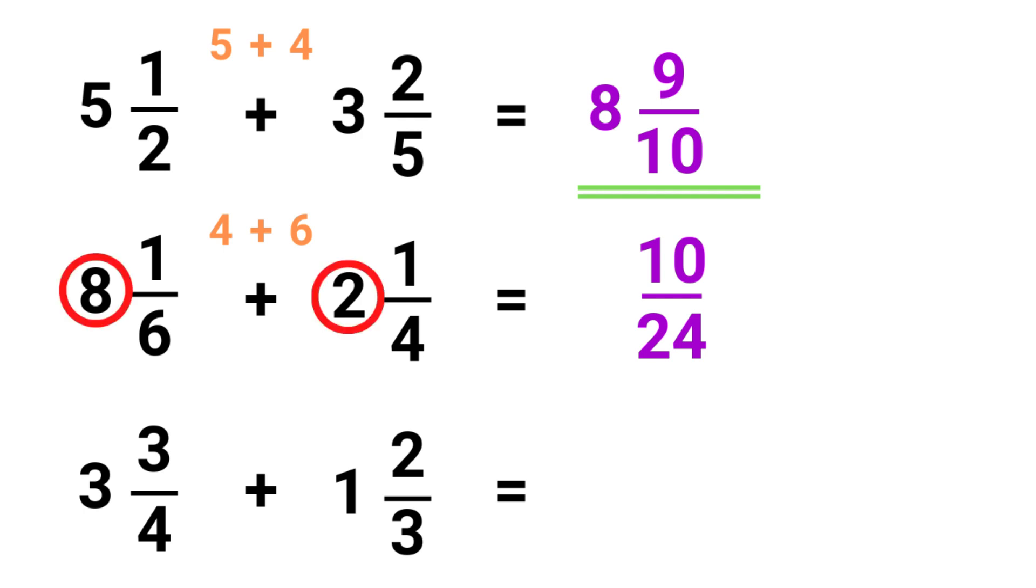Finally, we have 8 plus 2 equals 10. There's a little thing here, this could be simplified further because both numerator and denominator can be divided by 2, and we get 10 5/12.